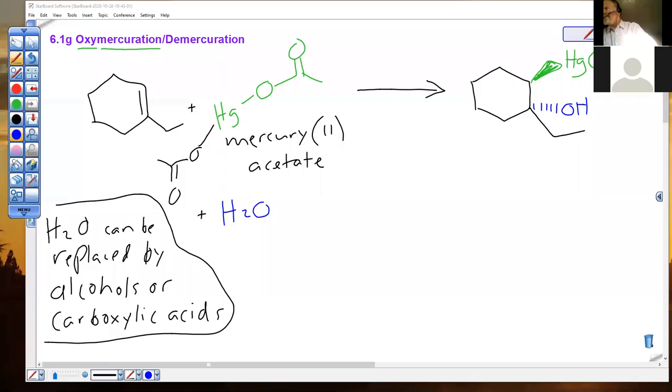Moving back to oxymercuration-demercuration. We put an oxygen on the more electronegative atom, on the more substituted carbon, and the less electronegative mercury on the less substituted carbon - we call that Markovnikov regioselectivity. The two new groups are on opposite sides of the ring, we call that anti-stereoselectivity, because there was a backside attack involved. Once again, water is a reactant and the solvent.